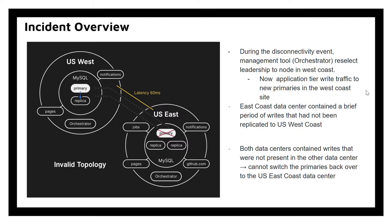However, during the disconnectivity event, the management tool — Orchestrator, which GitHub uses — started an automatic process of reselecting leadership and chose a node in the West Coast. The application tier then routed traffic to the new primary in the West Coast. Now the US East Coast data center contained a brief period of writes not yet replicated to US West Coast, and US West Coast also had new data writes not replicated to US East Coast.